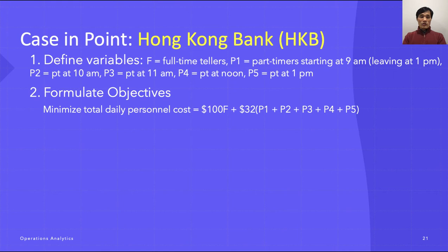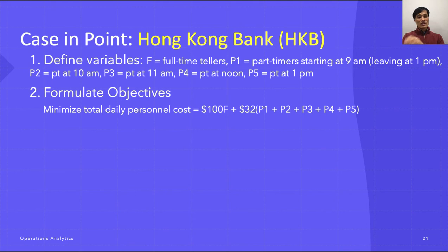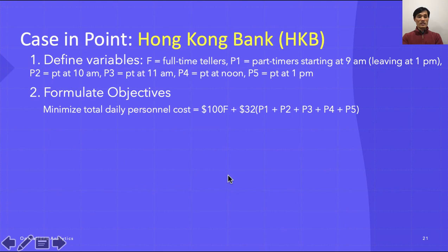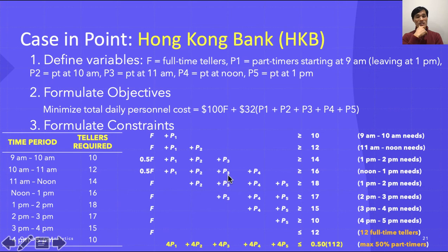In terms of formulating the objective function, we pay $100 per day for full-time tellers and $32 per day for part-timers. Therefore our objective is to minimize total daily personnel cost, defined as: 100F + 32(P1 + P2 + P3 + P4 + P5).